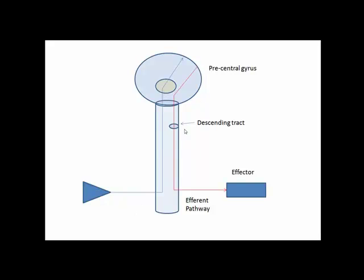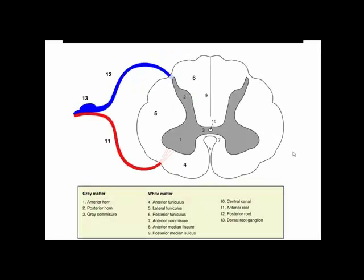Now we have a more complete picture of the sensory motor pathway. Looking at more specifics — just where are the spinal tracts — we first need to review the anatomy of the spinal cord. This is a transverse section of the spinal cord. The spinal cord consists of a core of gray matter surrounded by white matter. The white matter is divided into funiculi: a posterior funiculus, an anterior funiculus, and two lateral funiculi. The spinal tracts are located in these funiculi. The gray matter is organized into horns: a posterior horn, a lateral horn, and an anterior horn.